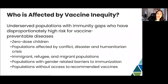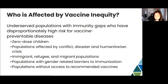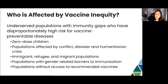When we have vaccine inequity or differing levels of access to vaccine by virtue of geography or other characteristics, we see underserved populations with immunity gaps who have disproportionately high risk for vaccine-preventable diseases. This can include zero-dose children in communities, populations affected by conflict, disaster, and humanitarian crisis, immigrant, refugee, and migrant populations, populations with gender-related barriers to immunization, and populations without access to recommended vaccines.